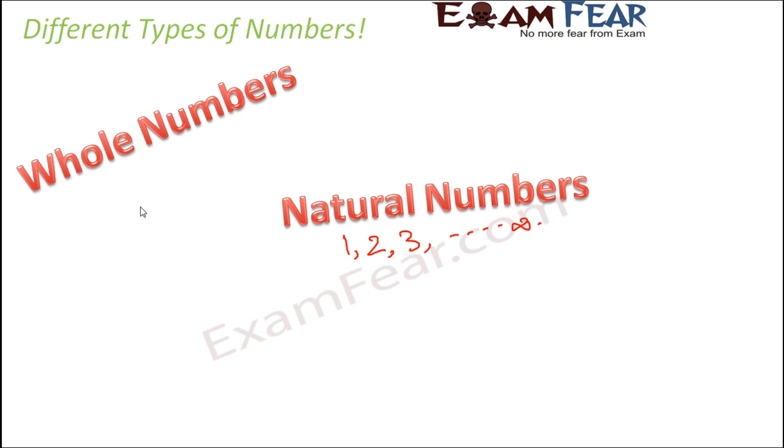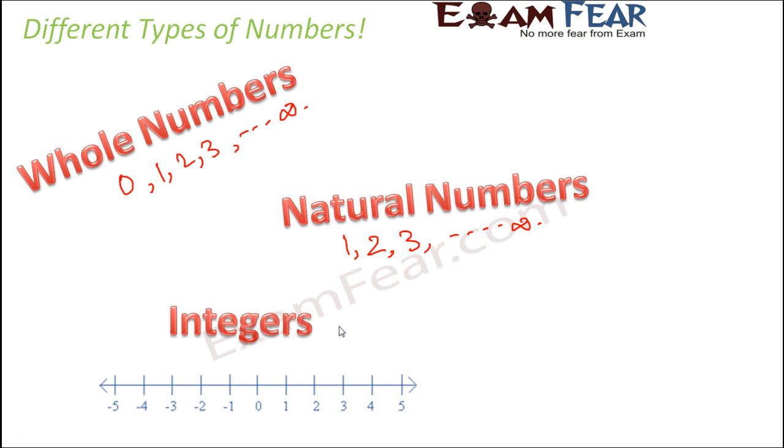The second type of number are the whole numbers. And whole numbers are nothing but 0, 1, 2, 3 till infinity. So basically all natural numbers along with 0 are called whole numbers. Then we have integers. So integers are basically all the whole numbers that is 0, 1, 2, 3, 4, 5, 6 till infinity plus the negative numbers. So all the positive numbers, negative numbers plus 0. So all of these together come under integers. So these are the three types of numbers which already existed. We already know about them.